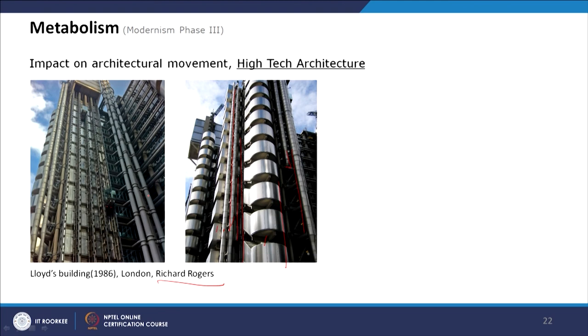In the next class we will discuss the neo-brutalist movement, where metabolism and brutalism fuse together, with examples of Indian architecture and the work of Indian and foreign architects who designed in India using this architectural movement.